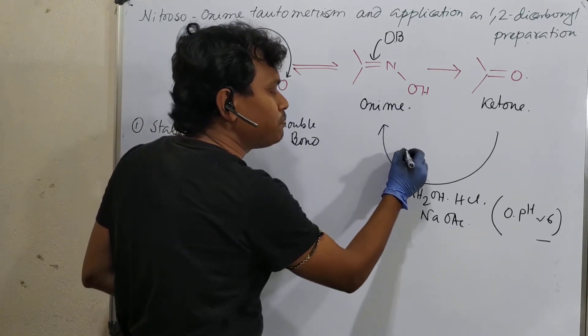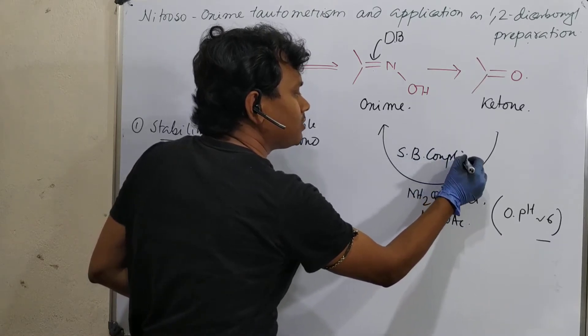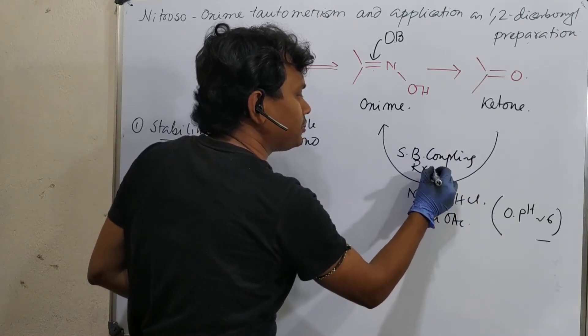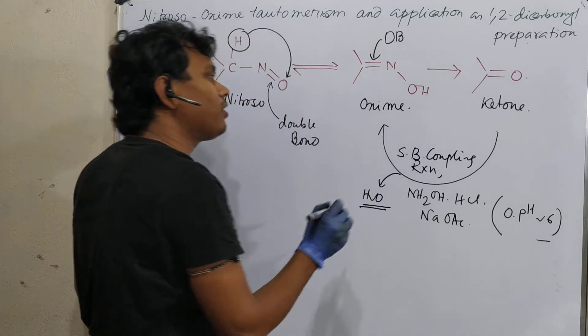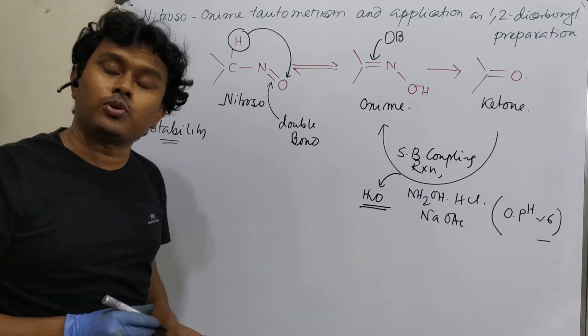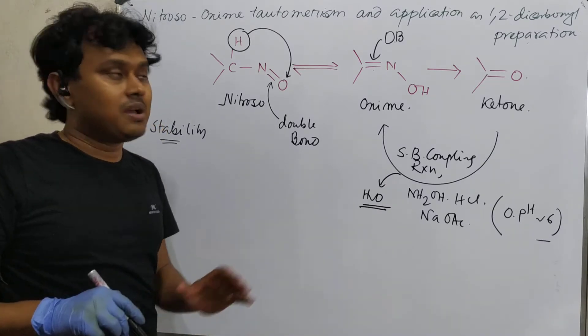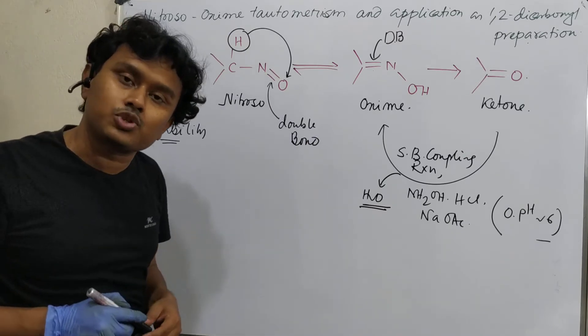This thing I have discussed in a separate video. That is oxime formation under optimum condition for oxime formation. So this is the oxime formation. And this is actually a Schiff base coupling reaction. It's a condensation reaction where one molecule of water is produced. So this thing you have already read. Why I gave you this information? It is always not possible to remember every reaction. But if we give some common thing or similarity, it helps us to remember.